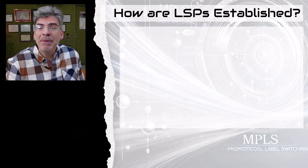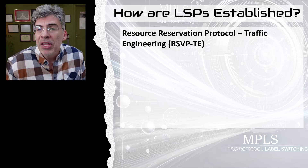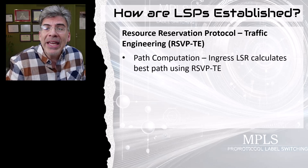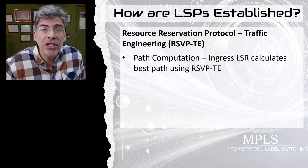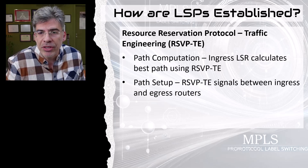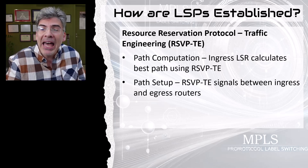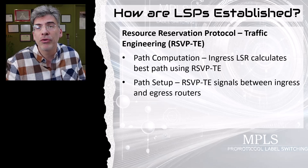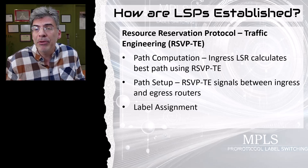The establishment of an LSP in MPLS TE relies on the Resource Reservation Protocol Traffic Engineering, or RSVP-TE. RSVP-TE is a signaling protocol that communicates the constraints and requirements of the LSP to all routers along the path. First, we have path computation — the ingress LSR calculates the best path for the LSP based on information about link attributes like bandwidth, cost, and available resources. Then, once the path is computed, RSVP-TE signals the LSP setup by sending path and reservation messages between the ingress and egress routers, reserving resources such as bandwidth along the chosen path.